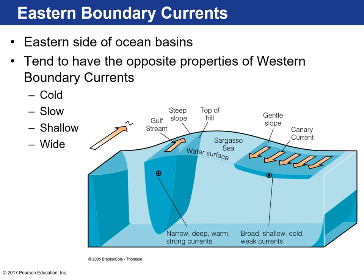Here's a cross-section showing western boundary currents. The best example and fastest western boundary current on Earth is the Gulf Stream. They're very narrow, but the velocity is very high. This cross-section shows the middle of a subtropical gyre — the water in a western boundary current is very warm and very deep. All of this water moves as a result of western intensification — very fast velocity, very narrow, and very warm water.